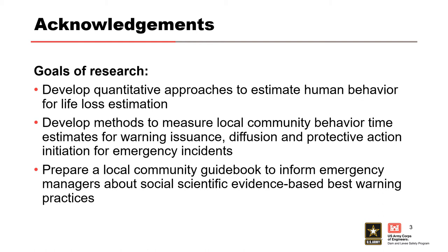The goal when we went to them was: we need quantitative approaches to estimate human behavior to support our life loss estimates. That included ways to measure community behavior, time estimates for warning issuance, diffusion, and protective action. Probably the coolest and most useful thing that came out of it was a local community guidebook to inform emergency managers about social scientific evidence-based warning practices — a really consumable guidebook we can hand off to anyone in emergency management.